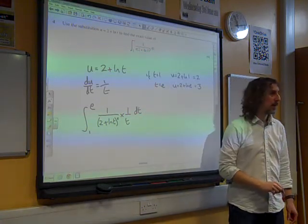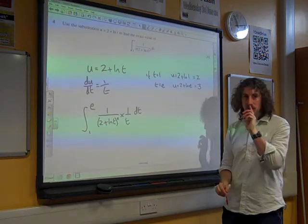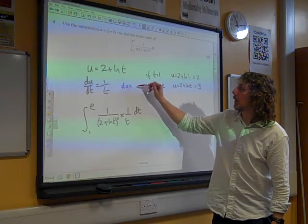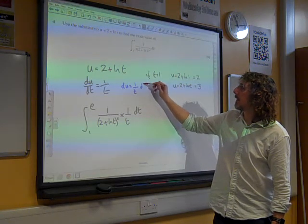Can we see that? Now, that's quite good, because that means that this line here, we can think of this as being du equals 1 over t dt.